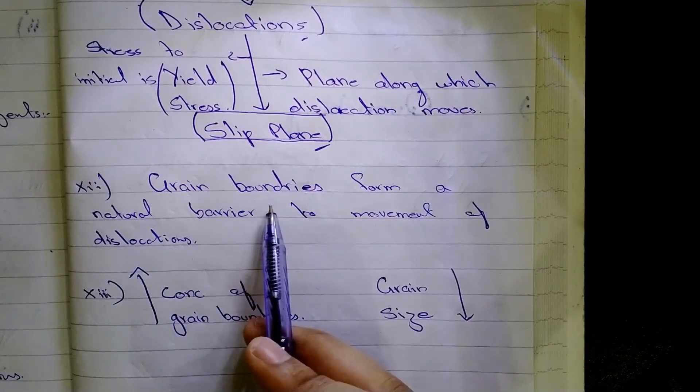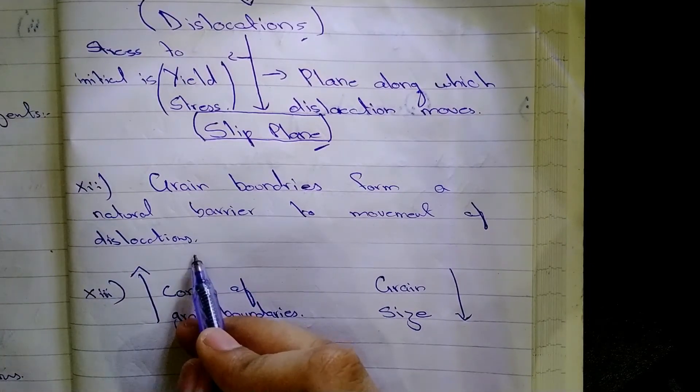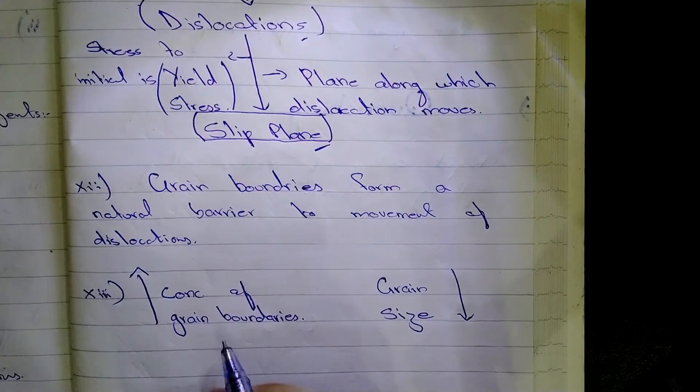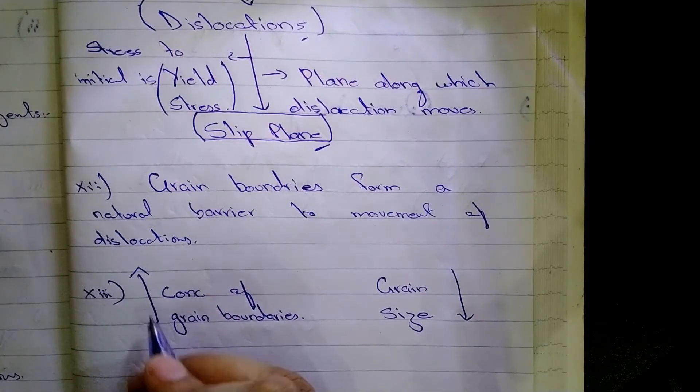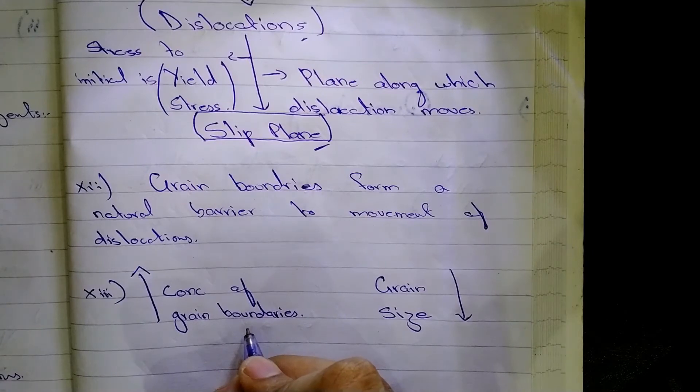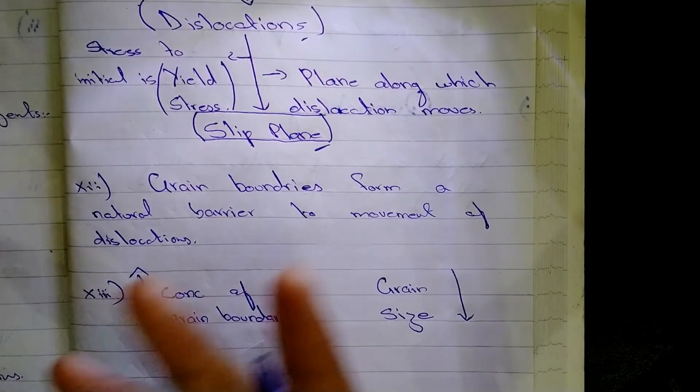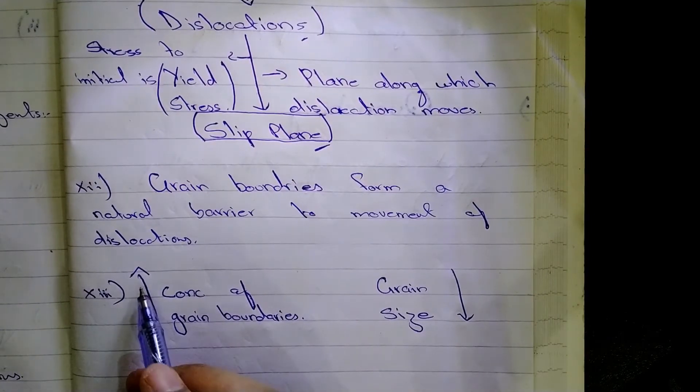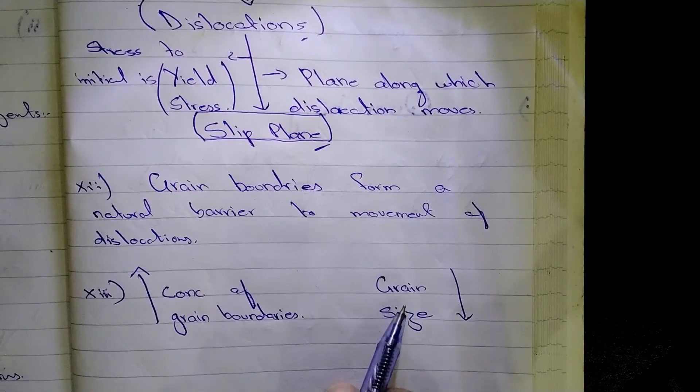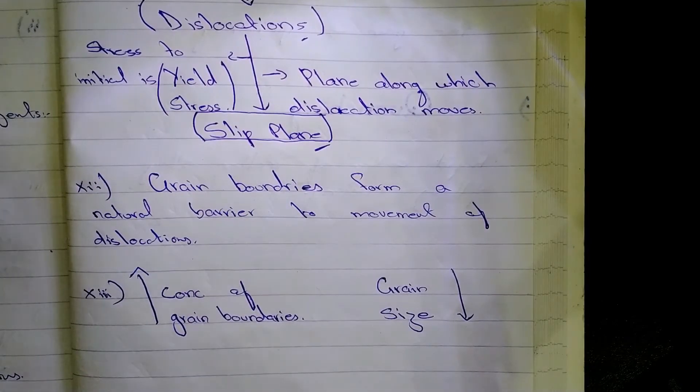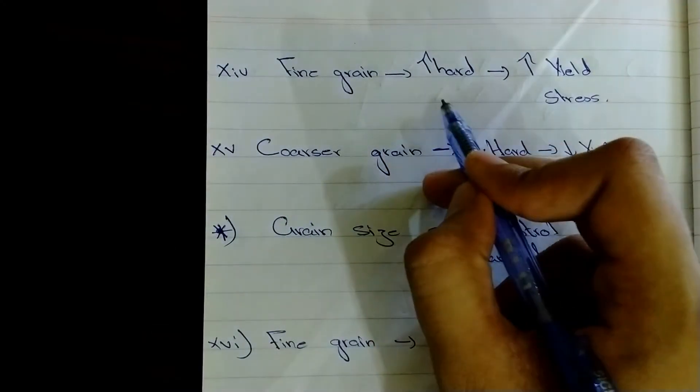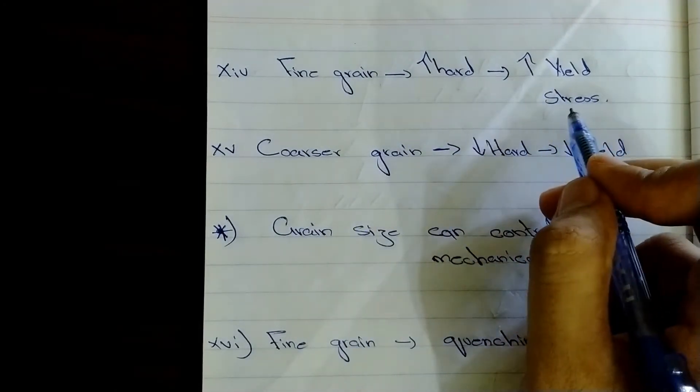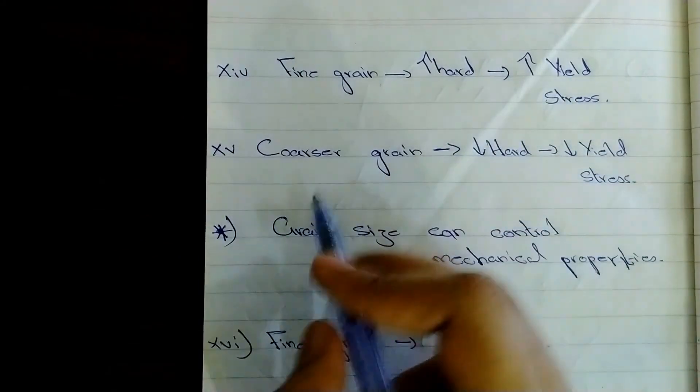Grain boundaries form a natural barrier to movement of dislocations. That is, the greater the grain boundaries, the lesser the dislocations and the harder will be the structure of the metal. So, as the concentration of grain boundary increases, and as I told earlier, grain boundaries are the area between two grains in contact. As the concentration of grain boundaries increases, the grain size decreases.